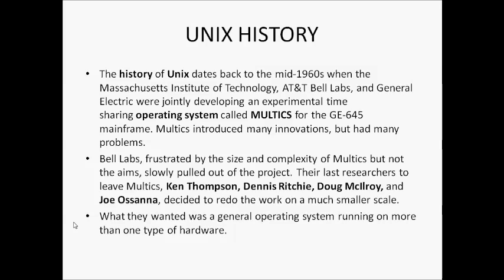I will be telling you the history of Unix — where it came from. The history of Unix dates back to the mid-1960s when the Massachusetts Institute of Technology, AT&T Labs, and General Electric were jointly developing an experimental time-sharing operating system called Multics for the GE-645 mainframe. They wanted to develop an operating system that could be shared by multiple users at the same time, whereas before, operating systems were used by one user at a time.